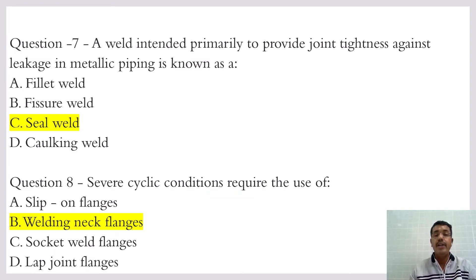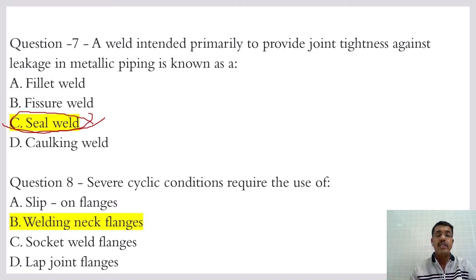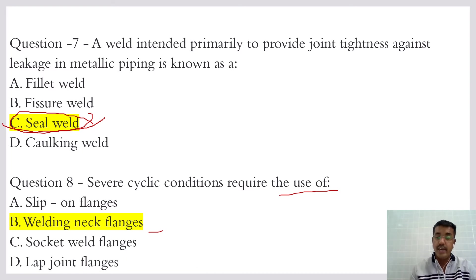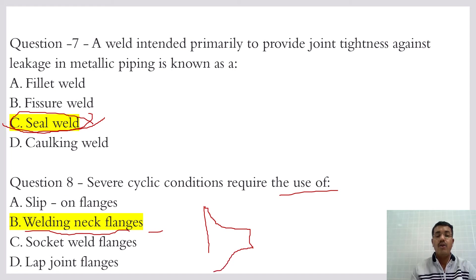A weld intended primarily to provide joint tightness against leakage in metallic piping is called a seal weld. Threaded joints need to be seal welded. Severe cycling conditions require the use of welding neck flanges, where we have to take utmost care. The welding neck flange has better strength compared to other flanges, so for severe cycling conditions we prefer welding neck flanges.